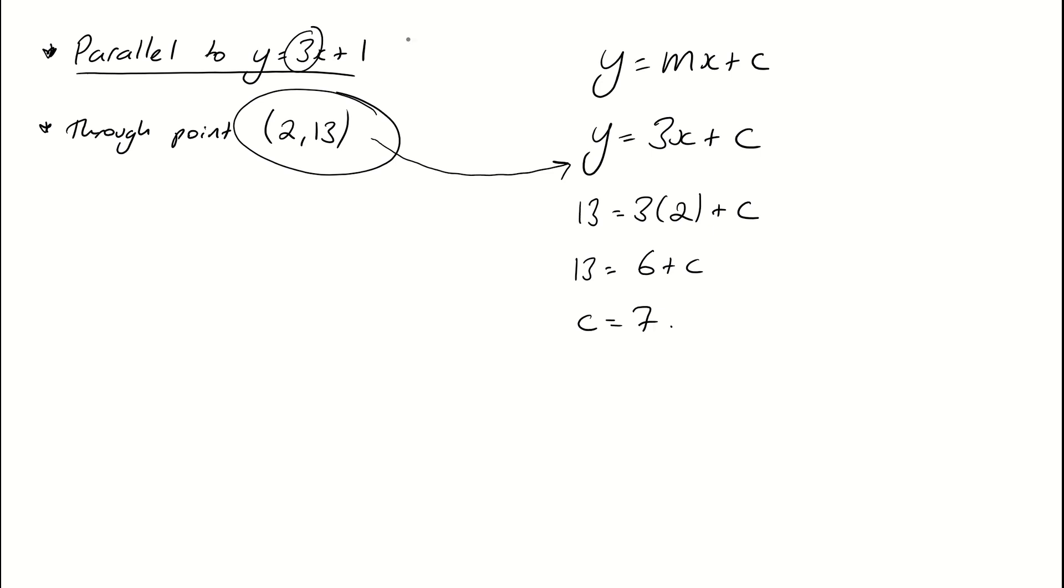So I get that the equation of the line, which is parallel to y equals 3x plus 1, and it goes through that point there, has to be y equals 3x plus 7. So that's how we can find the equation of parallel lines.